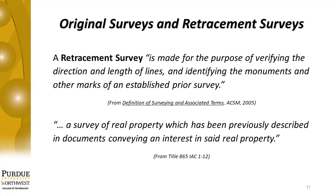For the definition of a retracement survey, I have two sources: the American Congress on Surveying and Mapping definitions handbook and Rule 12. From ACSM, a retracement survey is made for the purpose of verifying the direction and length of lines and identifying the monuments and other marks of an established prior survey. Rule 12 says a retracement survey is a survey of real property which has been previously described in documents conveying an interest in said real property. In order to complete a retracement survey, you have to have had an original survey — that's what you base your retracement survey on.